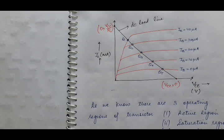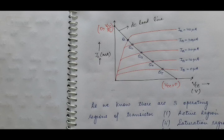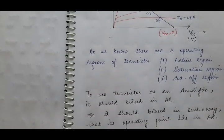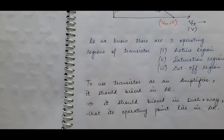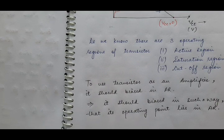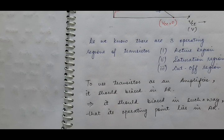Out of these five Q points, we have to find which Q point is the proper or suitable operating point for the transistor to work in the active region. As we know, there are three regions of operation of a transistor: active region, saturation region, and cutoff region. Since we are using the transistor as an amplifier, it should be biased in such a way that it operates in the active region always. So its operating point must lie in the active region.